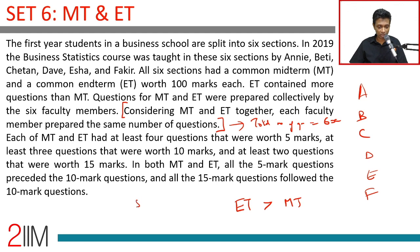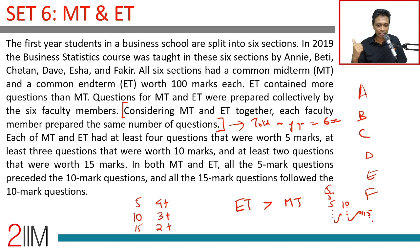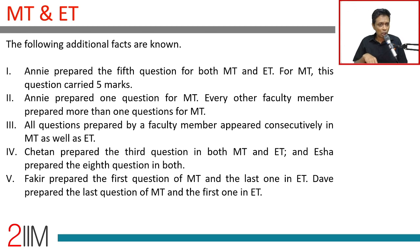Each of MT and ET had at least four questions worth five marks each, at least three questions worth ten marks each, and at least two worth fifteen marks each. In both MT and ET, all five-mark questions preceded the ten-mark questions, and all fifteen-mark questions followed the ten-mark questions — so the paper goes five-mark, then ten-mark, then fifteen-mark in ascending order.